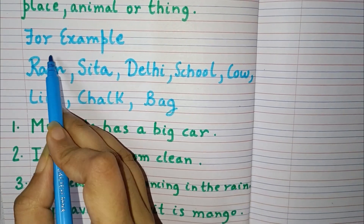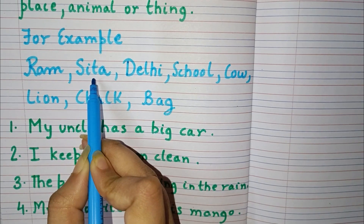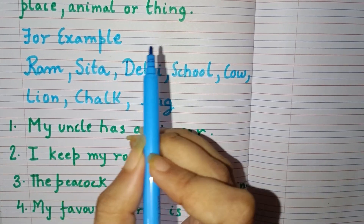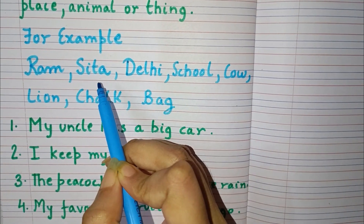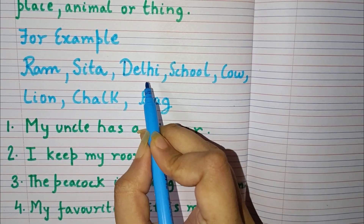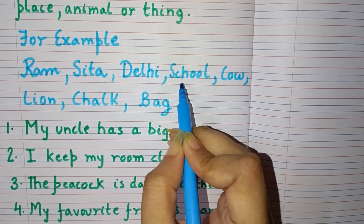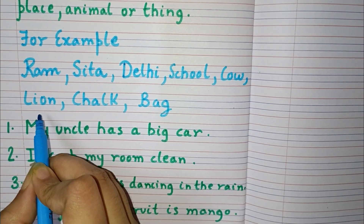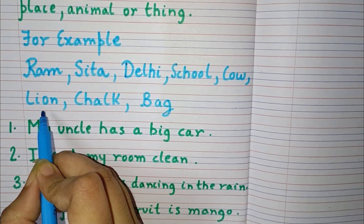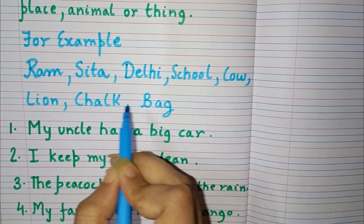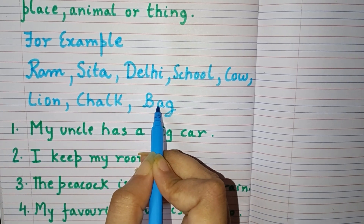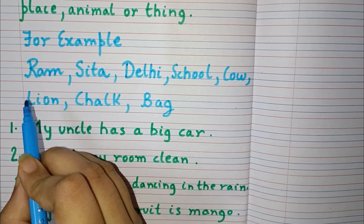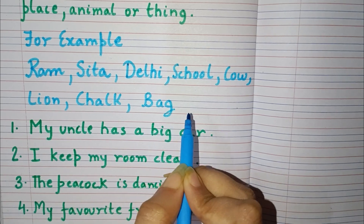For example, Ram and Sita are names of persons. Delhi and school are names of places. Cow and lion are names of animals, and chalk and bag are names of things. So these are all examples of noun.